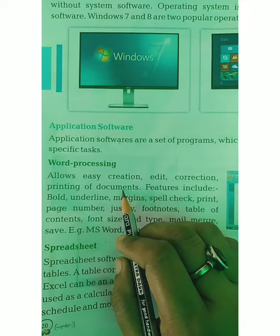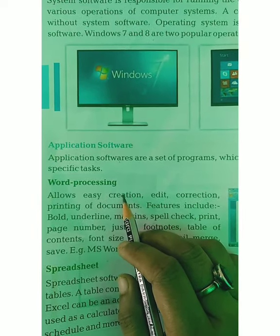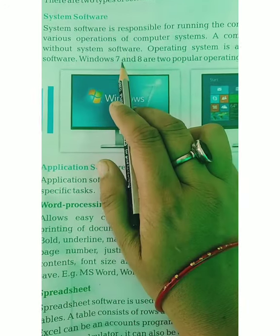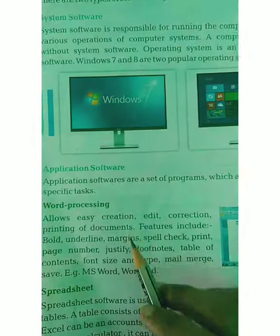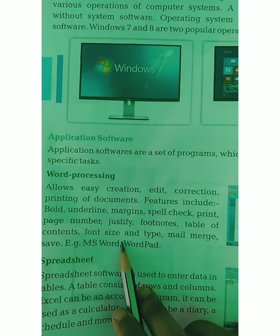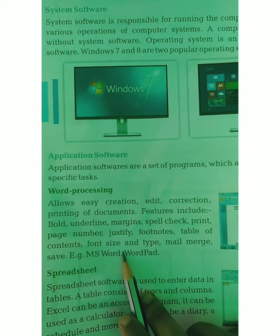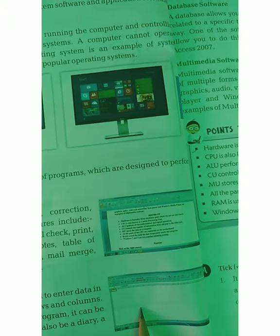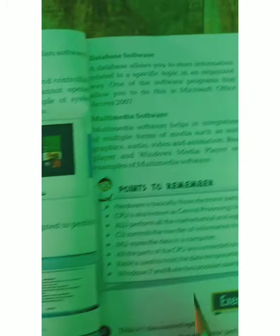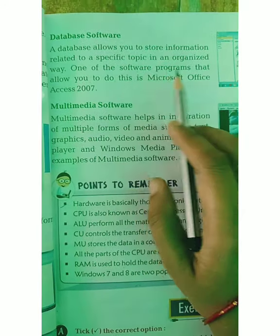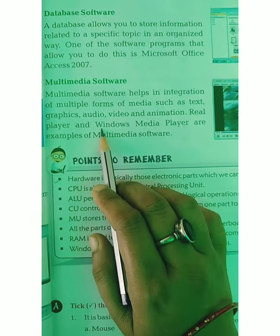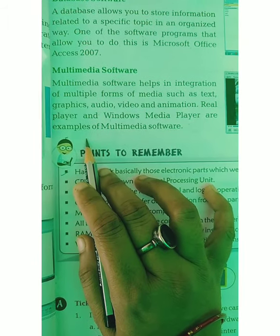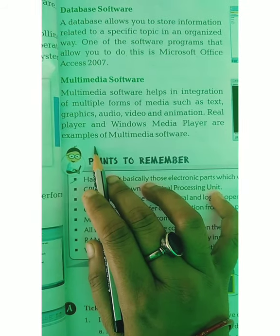Application software is used for specific purposes. Windows 7 and 8 are operating systems — they are system software. Application software includes MS Word, where you create documents; MS Excel, where you create records; MS Access for databases; and multimedia software like Windows Media Player, which you use to watch movies and listen to songs.